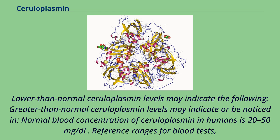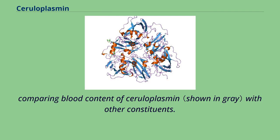Lower than normal ceruloplasmin levels may indicate certain conditions, while greater than normal ceruloplasmin levels may indicate or be noticed in others. Normal blood concentration of ceruloplasmin in humans is 20–50 mg/dL. Reference ranges for blood tests compare blood content of ceruloplasmin with other constituents.